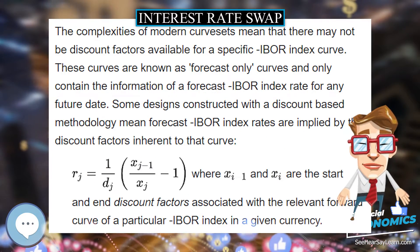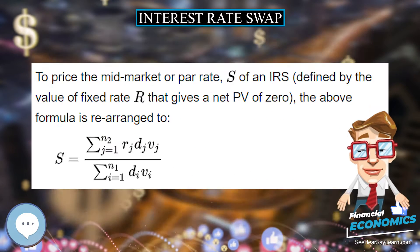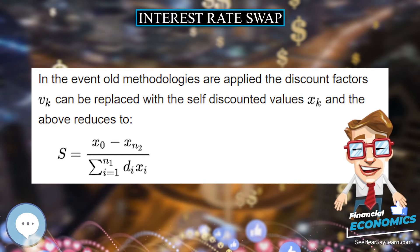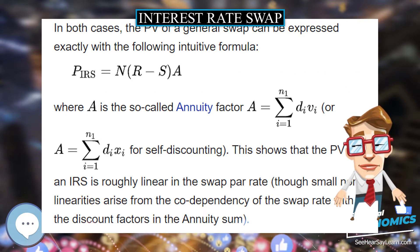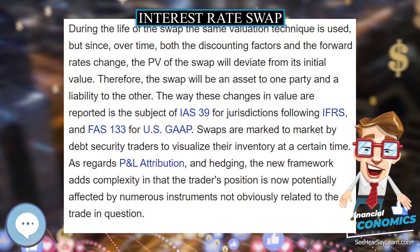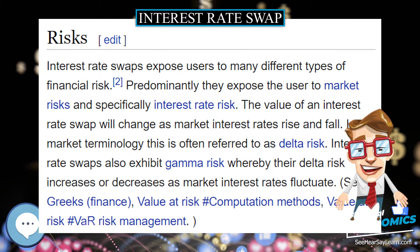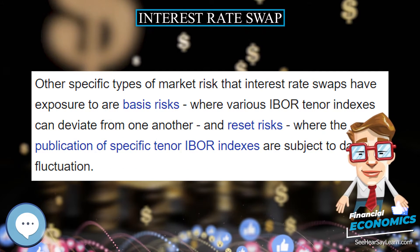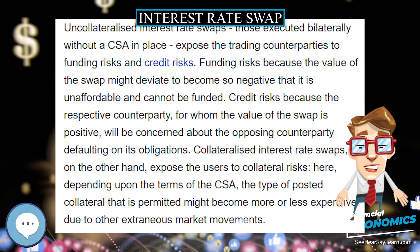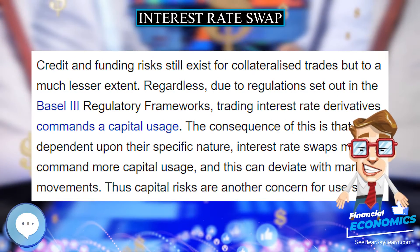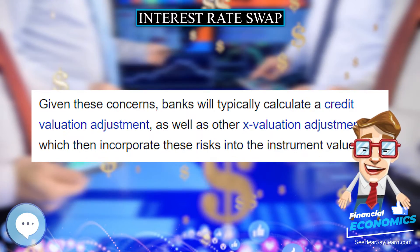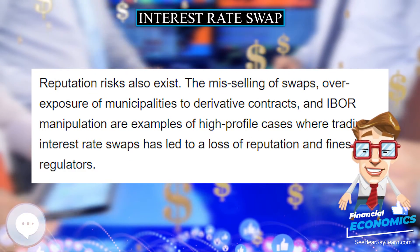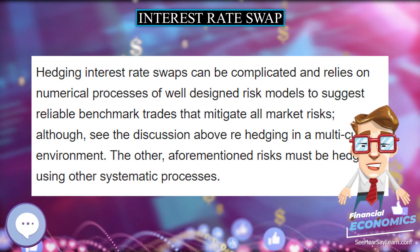Calculating the fixed leg requires discounting all of the known cash flows by an appropriate discount factor, where N is the notional, R is the fixed rate, N1 is the number of payments, D_i is the decimalized day count fraction of the accrual in the i-th period, and V_i is the discount factor associated with the payment date of the i-th period. Calculating the floating leg is a similar process replacing the fixed rate with forecast index rates, where N2 is the number of payments of the floating leg and R_j are the forecast IBOR index rates of the appropriate currency. The PV of the IRS from the perspective of receiving the fixed leg is then derived from these components.